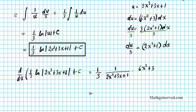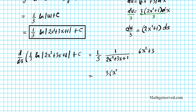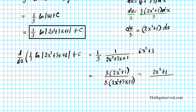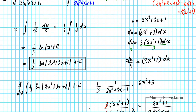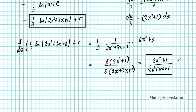Simplifying: factor 3 out of the numerator to get 3 times 2x squared plus 1, divided by 3 times 2x cubed plus 3x plus 1. The 3's cancel, leaving 2x squared plus 1 divided by 2x cubed plus 3x plus 1. Is this the integrand we started with? Absolutely — so we're confident our answer is correct.